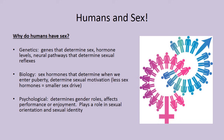Psychologically, sex determines gender roles, affects performance and enjoyment, and plays a role in sexual orientation and identity. There is a psychological need for sex — wanting to be close to someone, wanting companionship, connectivity, and a person to share time with. And when we have an orgasm, oxytocin is released — that cuddle hormone that makes us feel comfortable and content.